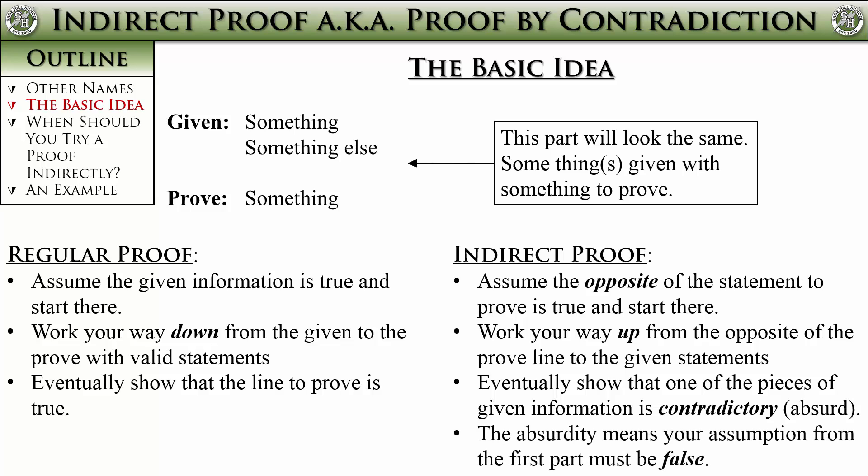By showing that something given is contradicted, we can conclude that our assumption must be false. So we work to prove that the opposite of the prove is false — we work from the bottom up. I know that's a bit confusing, and it will help when you see an example in a bit.